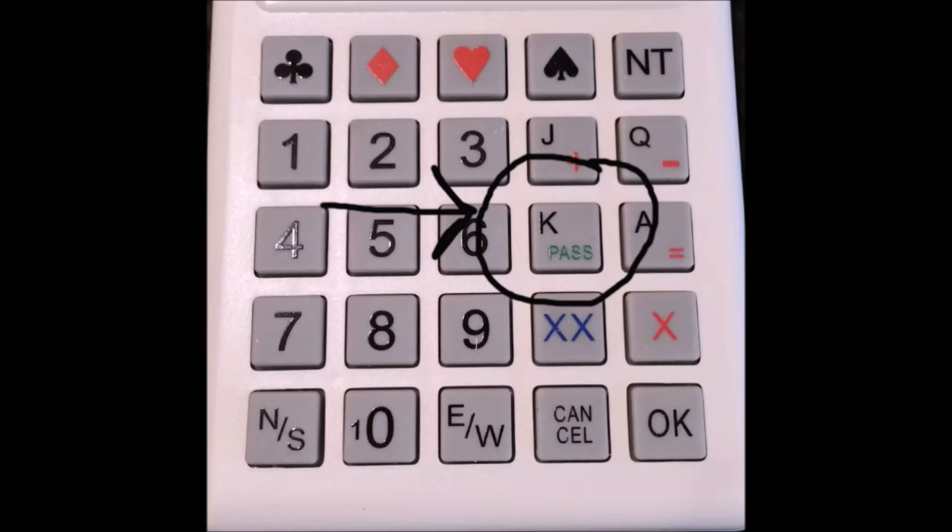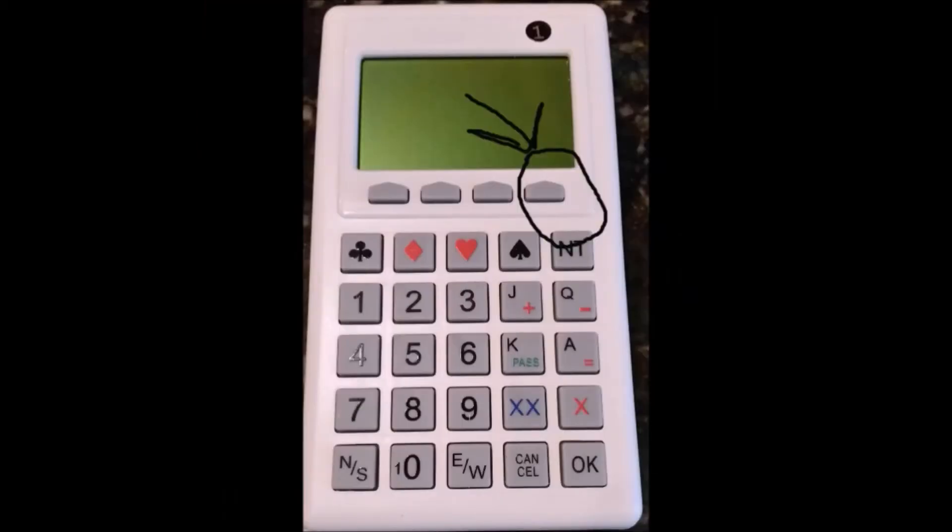Another area of concern is the accept button. Now, as I told you earlier, after North puts in the contract, East-West has the option to either accept or reject it. The accept key is not the OK key. It's in a little different place. And it will say accept over it. If you look at the upper right-hand corner, that's where the accept key is.